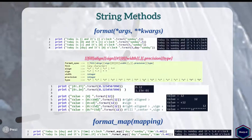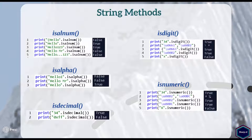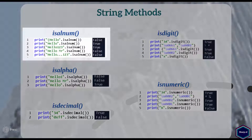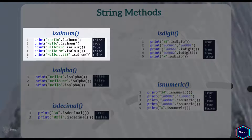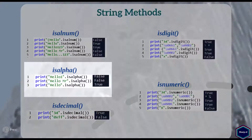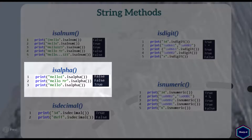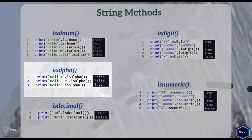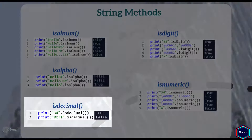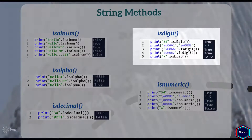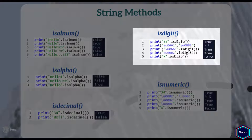Now let's move to the next few methods which are very similar to each other — they all return either boolean true or false. The isalnum method returns boolean true if all characters in the string are alphanumeric and there is at least one character in the string; otherwise it returns false. The isalpha method returns boolean true if all characters are alphabets; otherwise it returns false. The isdecimal method returns true if all characters in the string are decimal characters; otherwise it returns false. The isdigit method returns true if all characters in the string are digits — such as decimal numbers, subscripts, superscripts, etc.